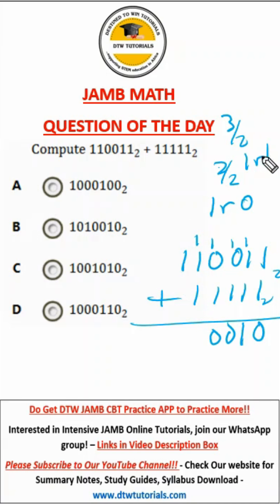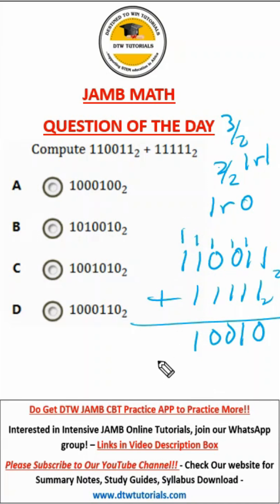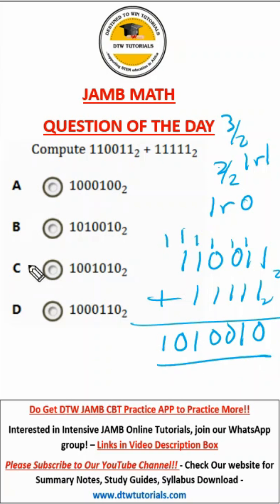This is 3. 3 divided by 2 is a 1 remainder 1 — carry another 1. 1 plus 1 is 2. 2 divided by 2, we have 1 remainder 0, carry that 1. And that 1 will come here. So this is our answer and the correct option is option B.